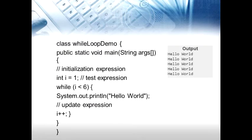The following example illustrates the working of the while loop. The class name is WhileLoopDemo, public static void main(String[] args). The initialization expression is int i = 1. The condition is while i < 6. Since we are not using less than or equal to, the output will print 5 times. The body prints system.out.println Hello World. The update expression is i++, incrementing i after each iteration.